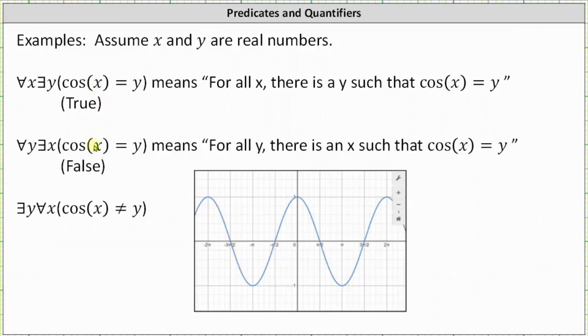Now the second quantified statement looks almost the same, except notice x and y have been switched. So the second quantified statement is for every y, there exists an x such that cosine(x) equals y.